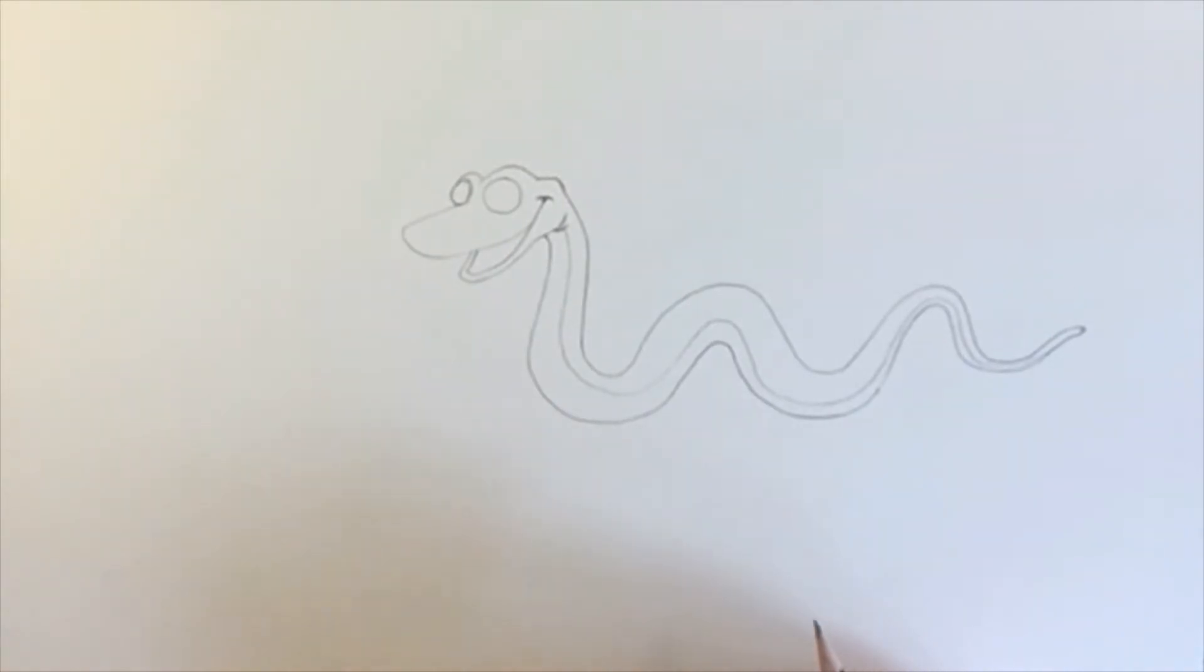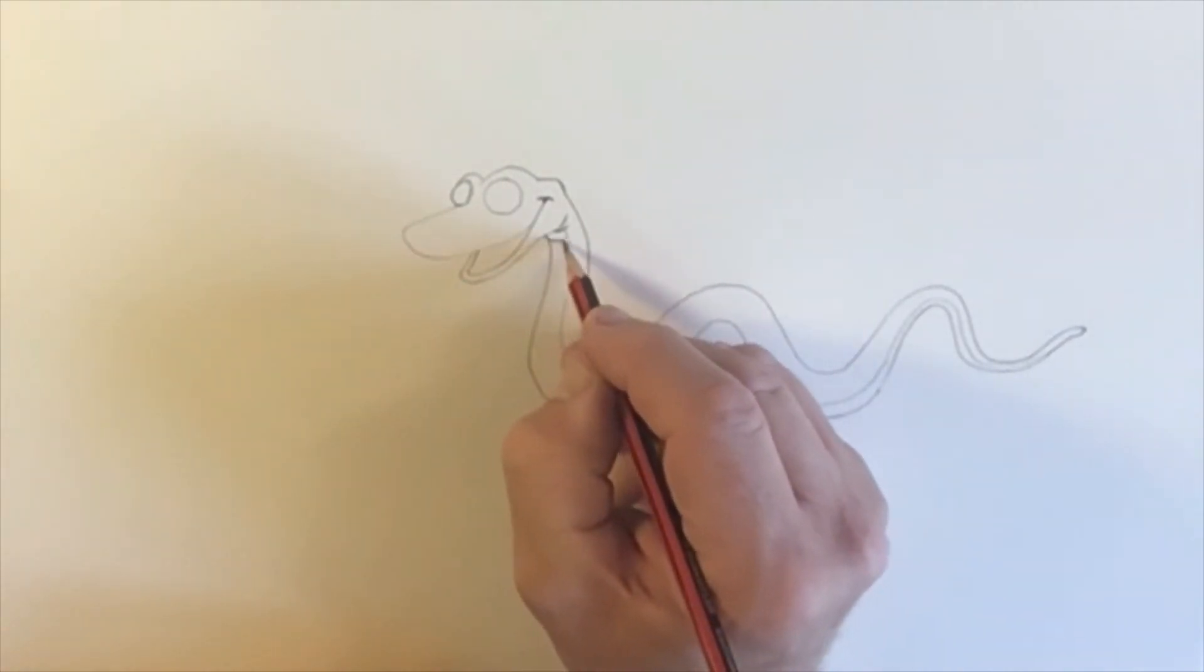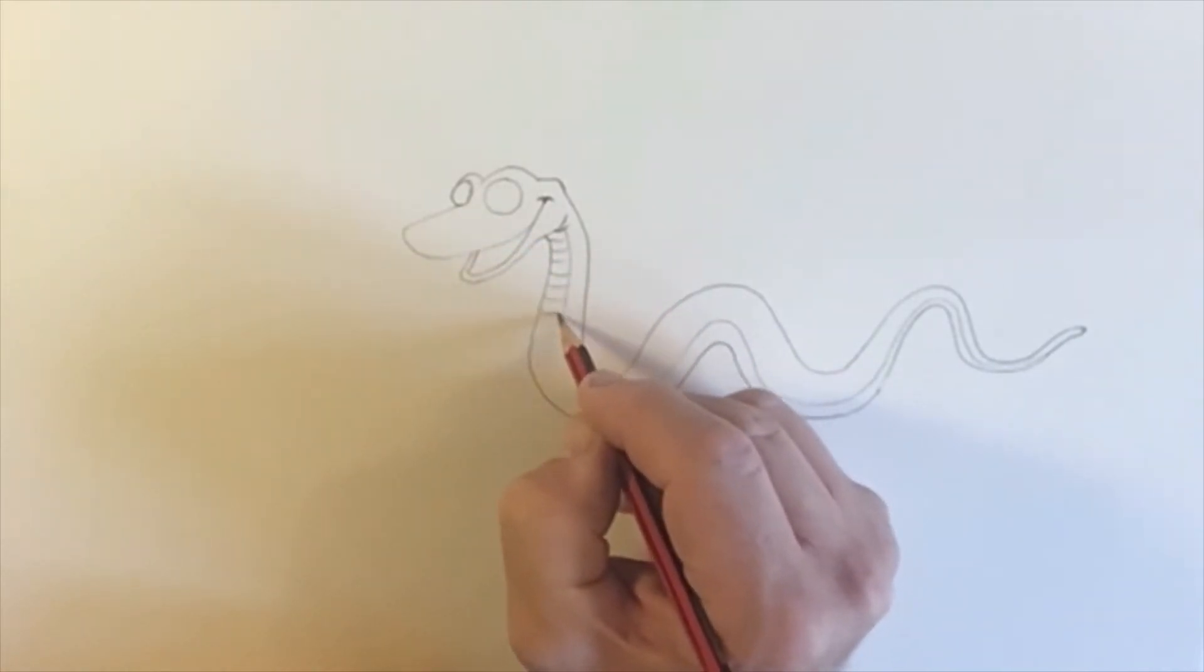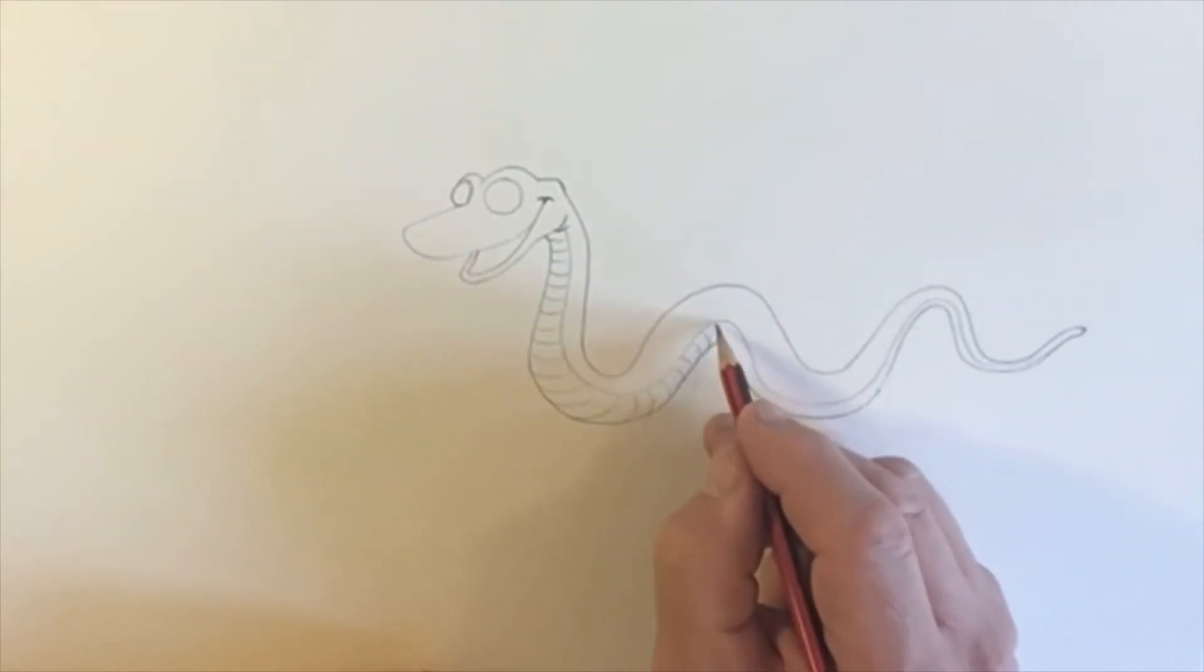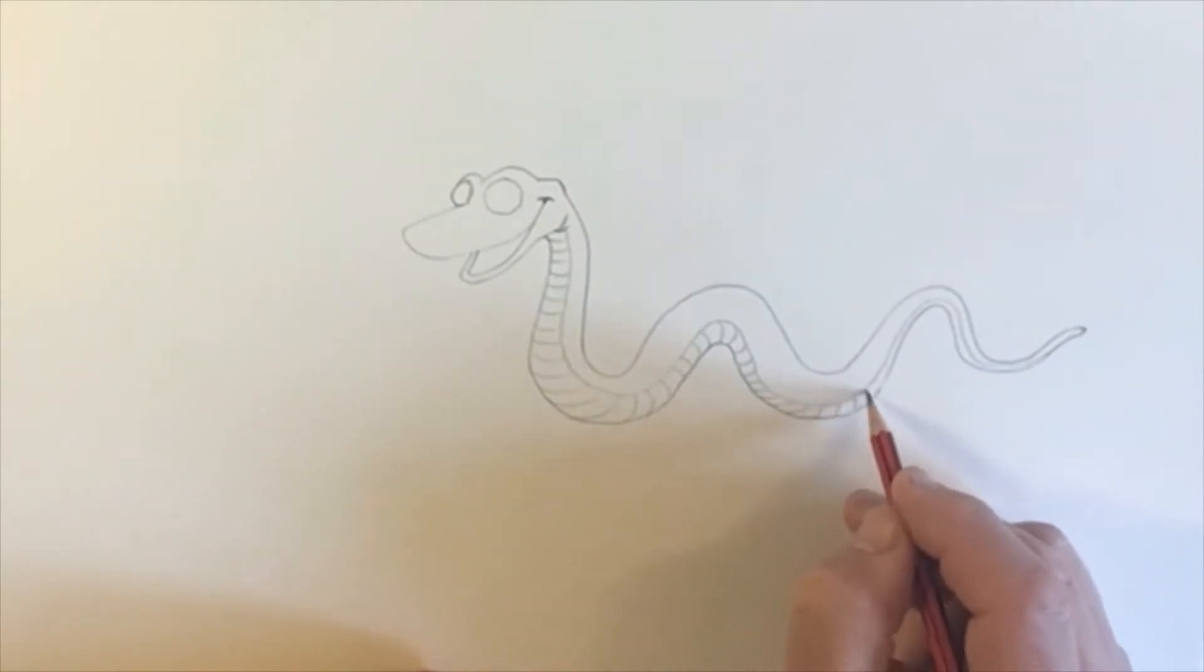Snakes also tend to have ridges underneath their belly. So we're going to just do some ridges, like curved lines, all the way down the snake's undercarriage. See they're curved lines, which shows you the snake is rounded. So we're going all the way up to the end. When you can't hardly see it, it's not really worth putting it in.